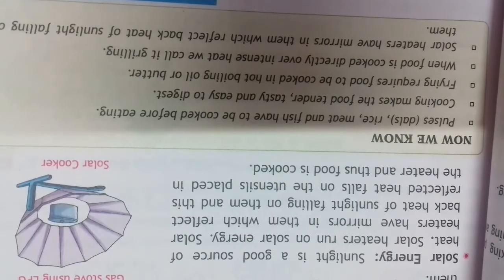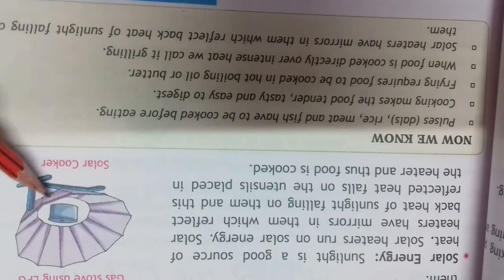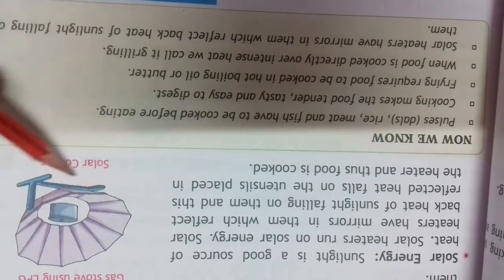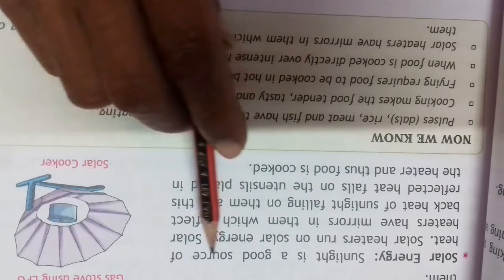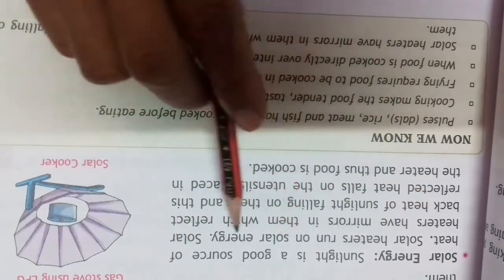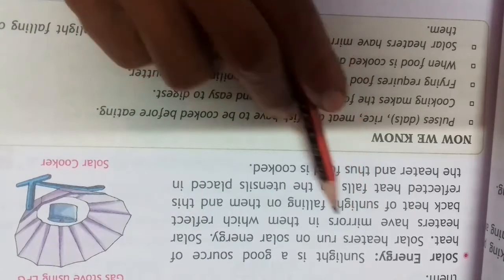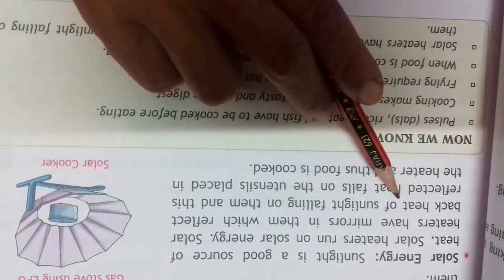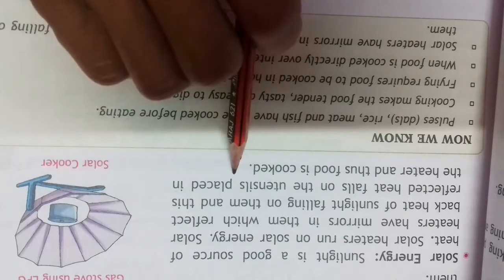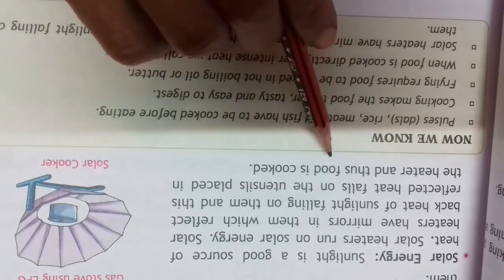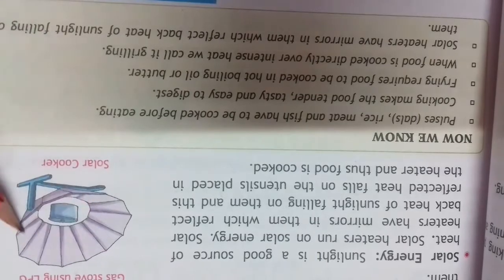Solar energy - we can use solar energy to cook food. This is a solar cooker. The utensils in it are black color. Sunlight is a good source of heat. Solar heaters run on solar energy. Solar heaters have mirrors in them which reflect back heat of the sun falling on them. And this reflected heat falls on the utensils placed in the heater and thus food is cooked.